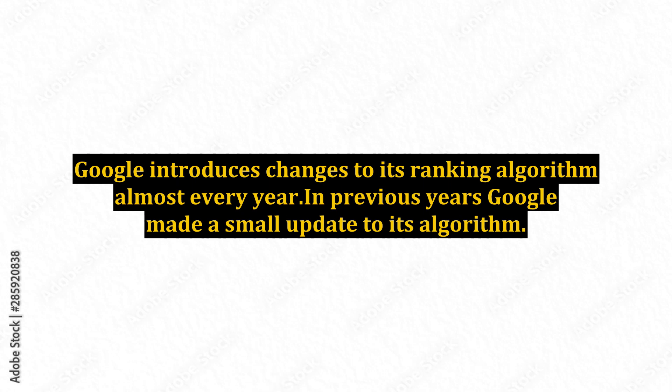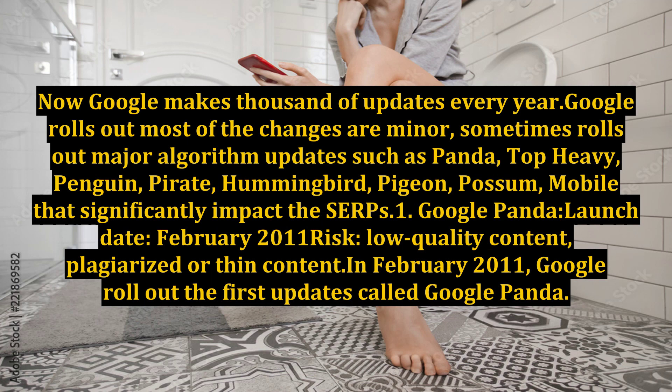In previous years, Google made a small update to its algorithm. Now Google makes thousands of updates every year. While most of the changes are minor, Google sometimes rolls out major algorithm updates such as Panda, Top Heavy, Penguin, Pirate, Hummingbird, Pigeon, Possum, and Mobile, that significantly impact the SERPs.